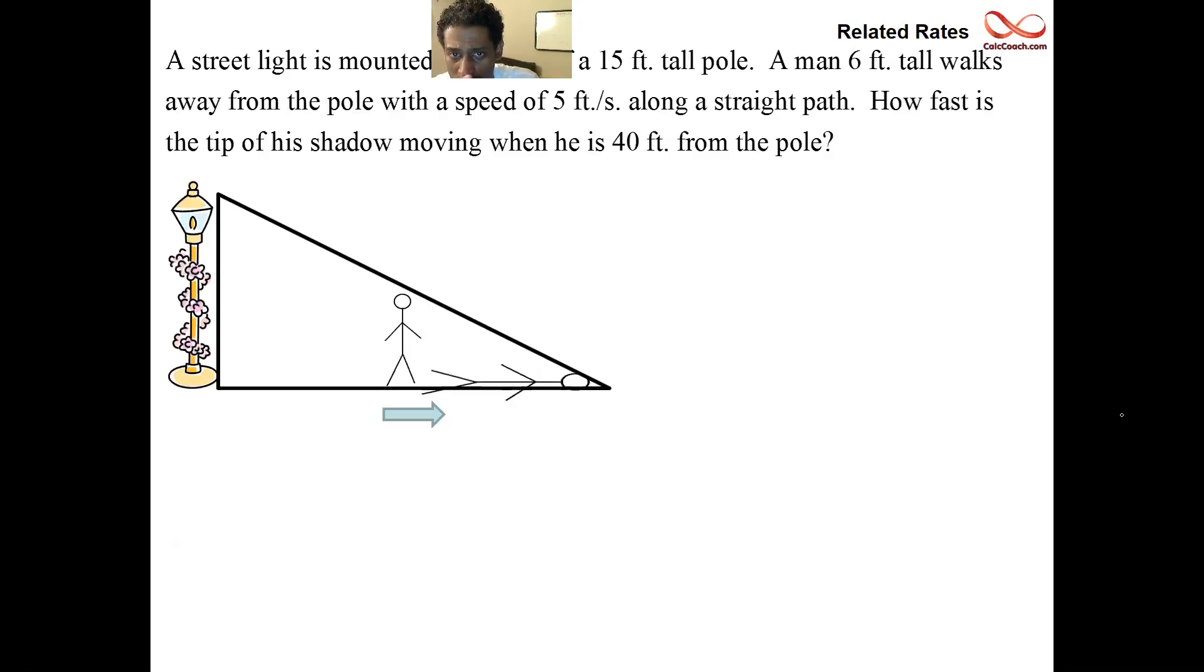Now, you read through the question, you get a drawing, you label the drawing. You label what's constant, you label what's changing. And so for us, constant is the height of the pole, the height of the person. But then what's changing is how far the person is away from the pole and how long the person's shadow is.